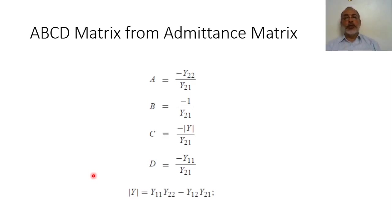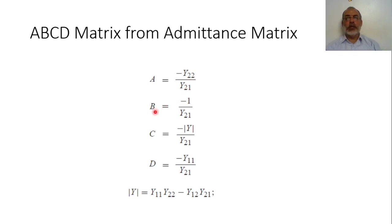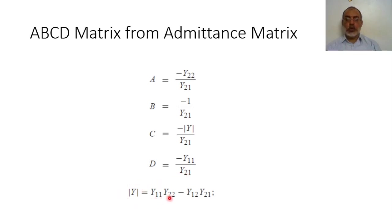If you are interested in obtaining the ABCD matrix from the admittance matrix: A = −Y22/Y21, B = −1/Y21, C = −det(Y)/Y21, and D = −Y11/Y21, where det(Y) = Y11·Y22 − Y12·Y21.